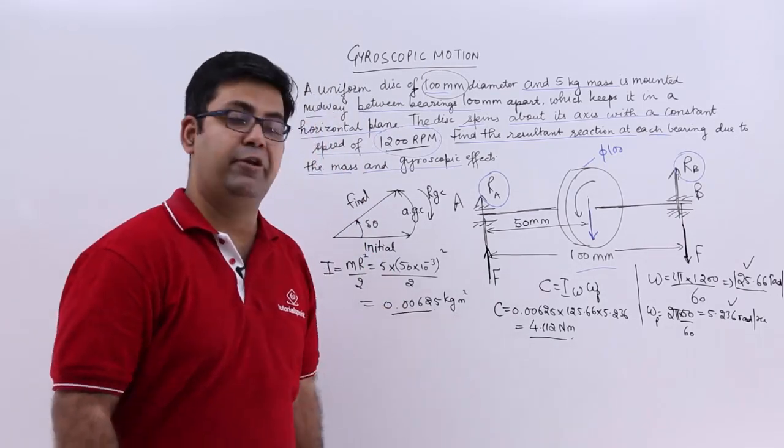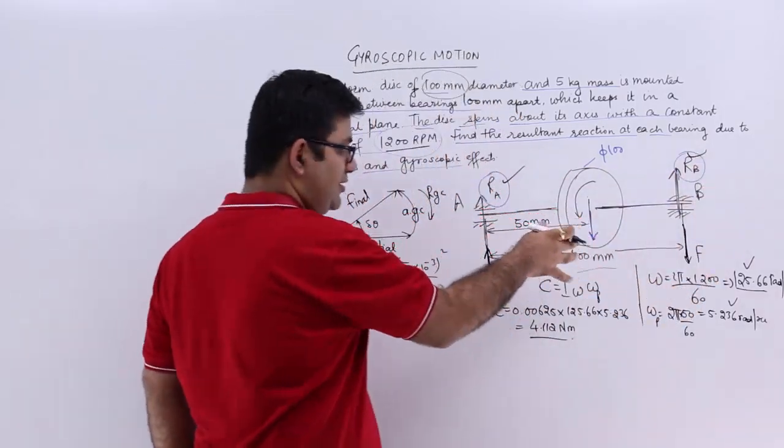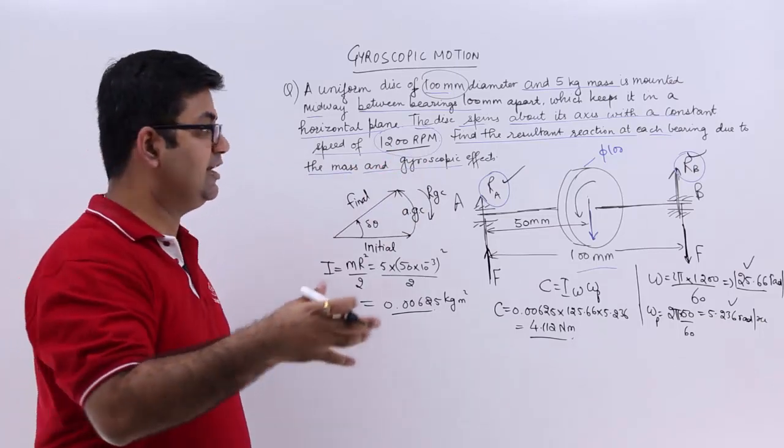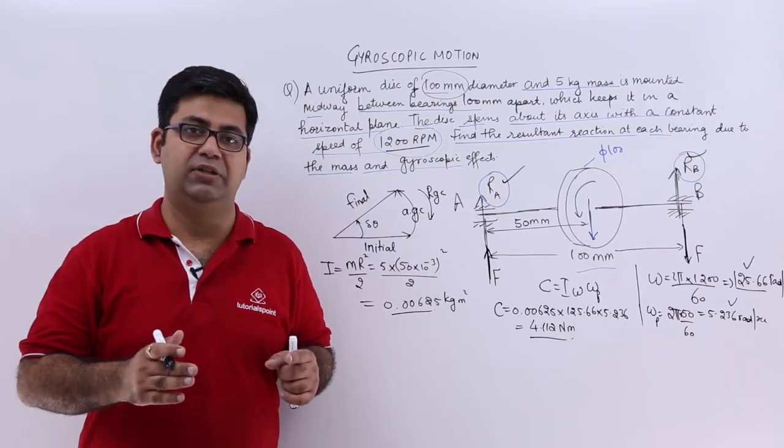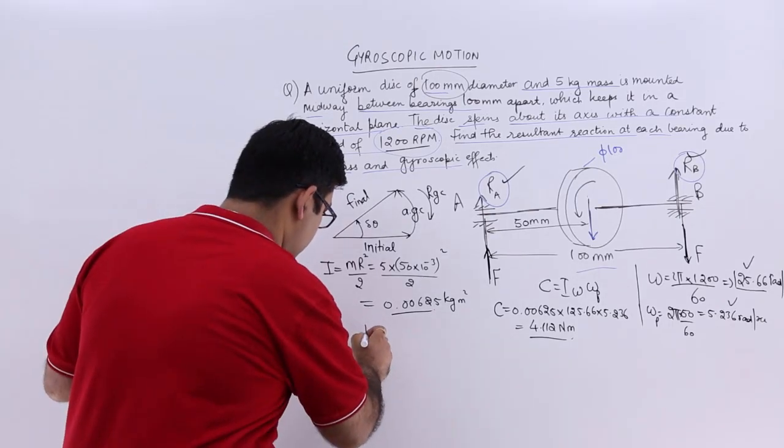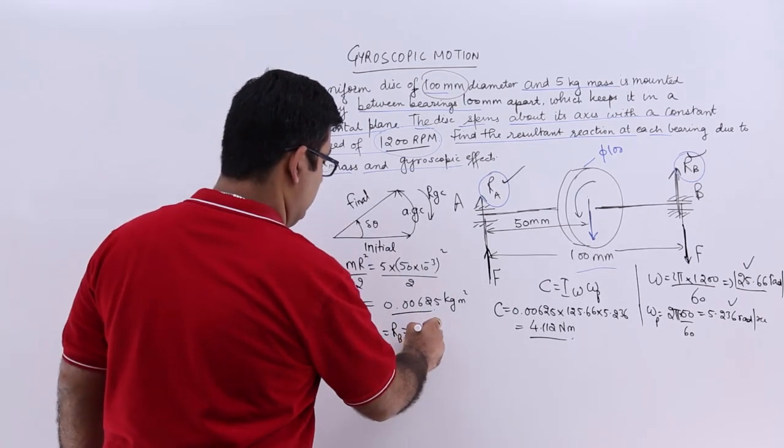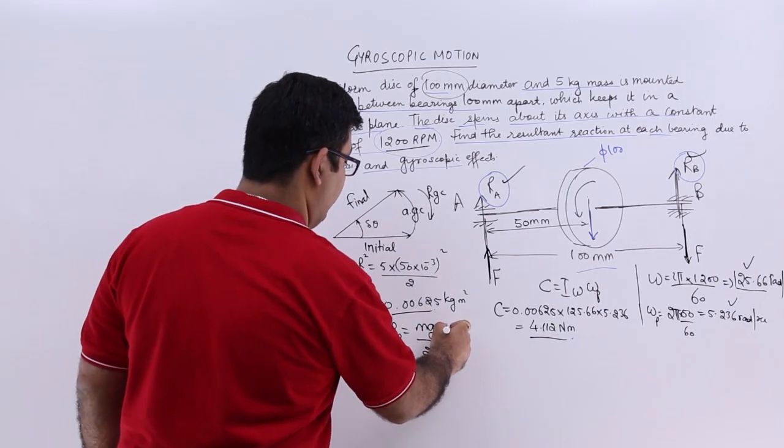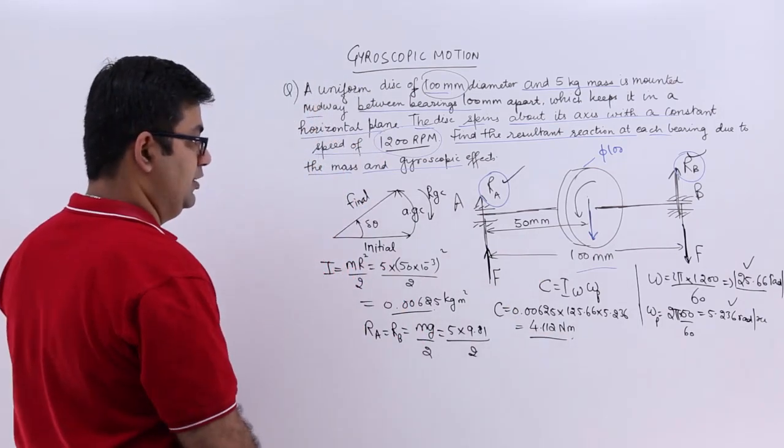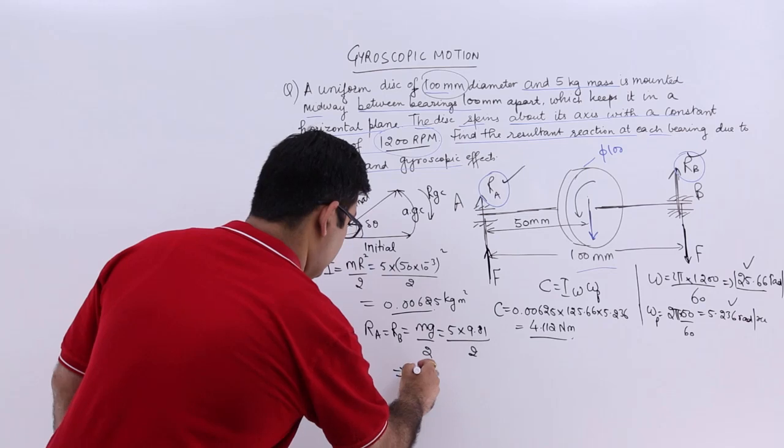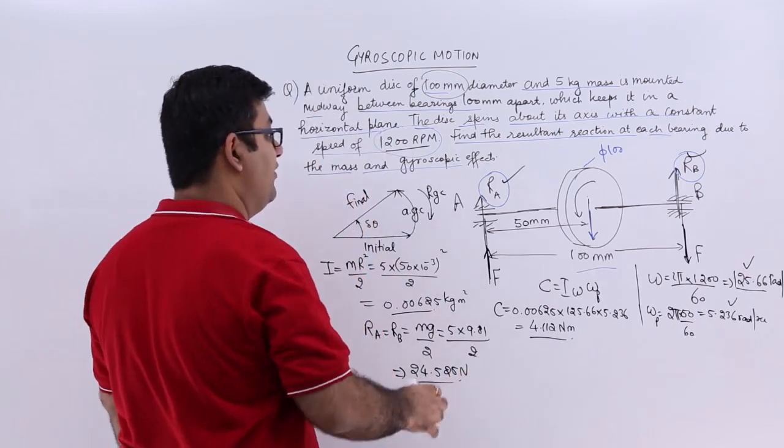Now we will find out these two values R_a and R_b. Because this disc is mounted centrally, these two would be same, equal to half of the total weight of this disc. So R_a = R_b = mg/2. This is 5 × 9.81 / 2, which gives you 24.525 newtons.